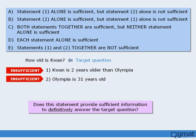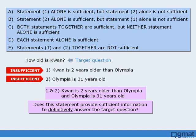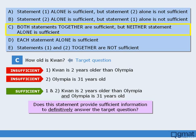When neither statement alone is sufficient, we need to examine both statements combined. If we combine the two statements, we know that Quan is 2 years older than Olympia, and we know that Olympia is 31 years old. Do the two statements combined provide enough information to answer the target question? The answer is yes — using both statements, we can conclude that Quan must be 33 years old. So statements 1 and 2 combined are sufficient, and the correct answer is C: both statements together are sufficient, but neither statement alone is sufficient.